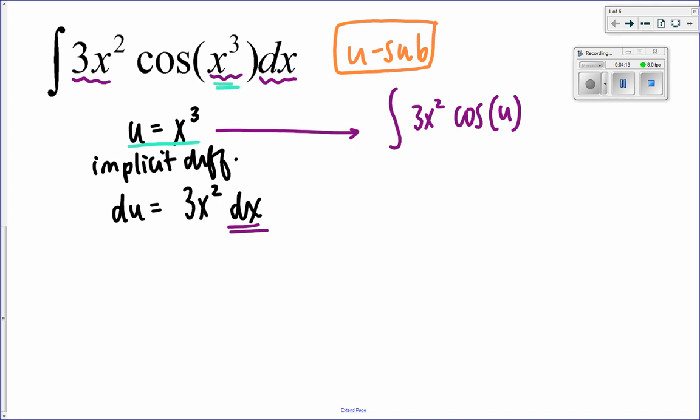Because we said u is x cubed, but we still have it with respect to x. And now here's a problem. I have two different variables. I don't want that. So I'm going to keep going with the information I have here to try and change all of these x's to be with respect to u. Okay, so if I want to solve for dx, because I need to get rid of this dx, then I'm going to divide both sides by 3x squared here. du divided by 3x squared is equal to dx. And now I can plug this in for my dx right there.